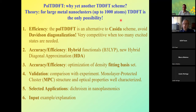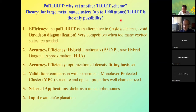Another good quality of the PolTDDFT method is that it can also do the analysis of the excited states very similar to the Casida scheme. There are other approaches of TDDFT, for example in real time, which are very efficient but are not able to extract the information that chemists want to know — for example, the assignment of excited states in terms of excited configurations and molecular orbital nature, which of course has a lot of chemical information.